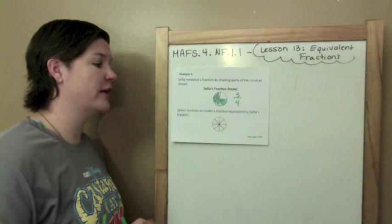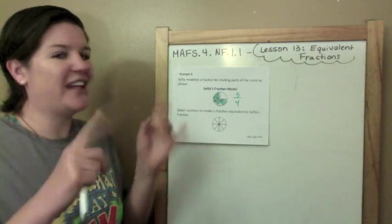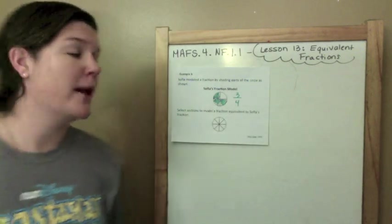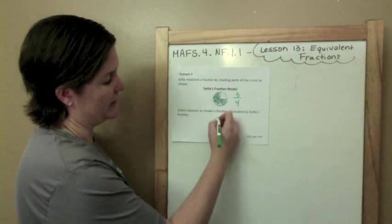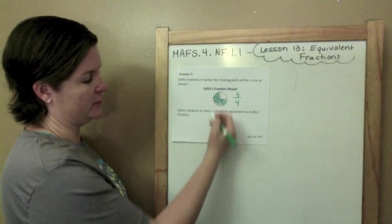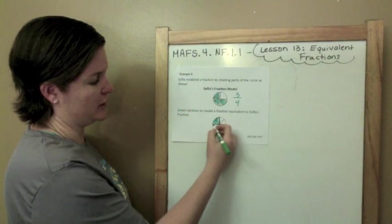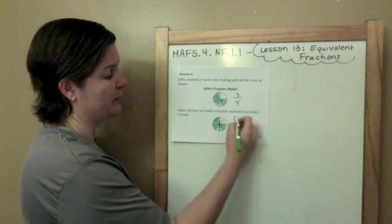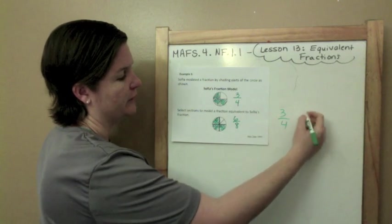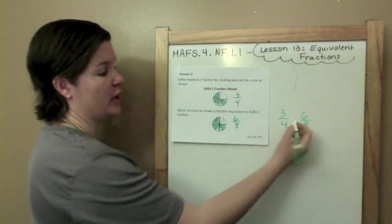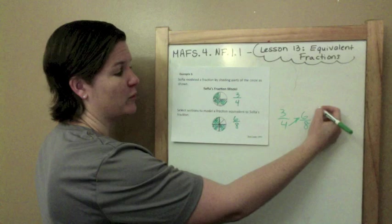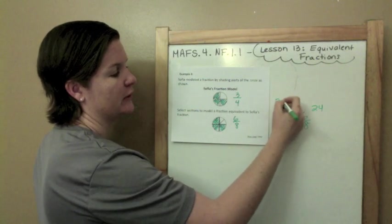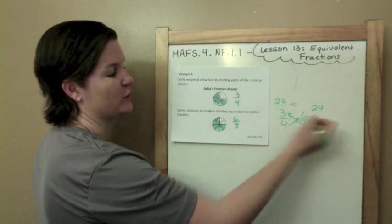Select sections to model a fraction equivalent to Sophia's fraction. So if you were selecting, this would be more on a computer-based test. But what we're going to do is instead of selecting, we're going to shade. We're going to represent our selections by shading. So this kind of looks like, I'm kind of seeing fourths here. So if I shade in that, it kind of looks like this. And if I shade in this part, it kind of looks like that. And then, oh! That looks great. They look equal, they look equivalent. And just to make sure, this would be 6 shaded out of 8. 3 fourths, 6 eighths. Let's use cross multiplication to check. Shoot your arrow at 4 times 6 equals 24. 8 times 3 equals 24. So yes, 24 equals 24. That's right.